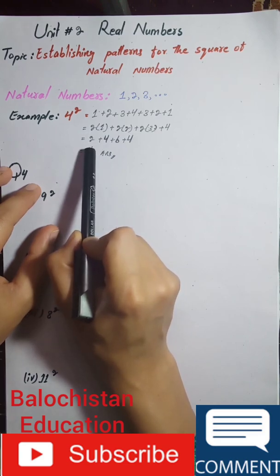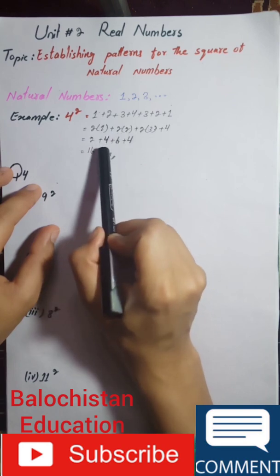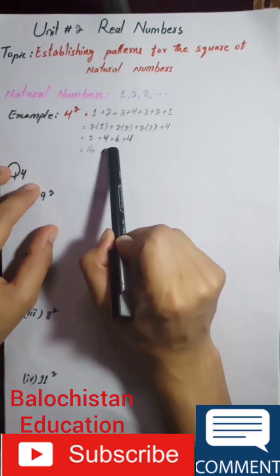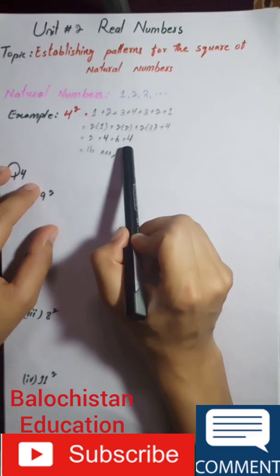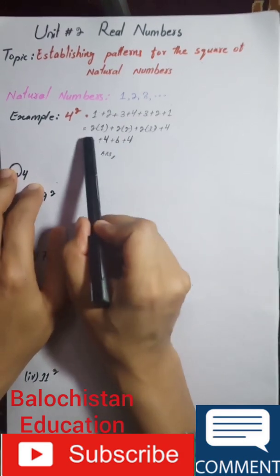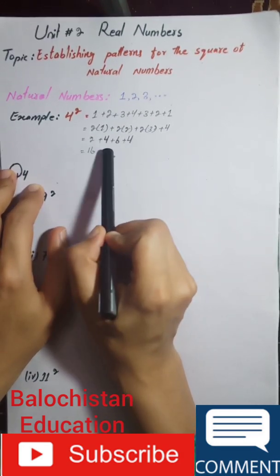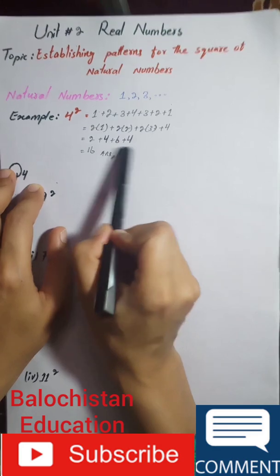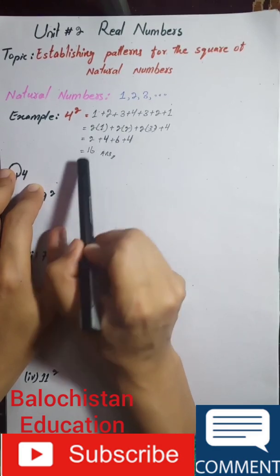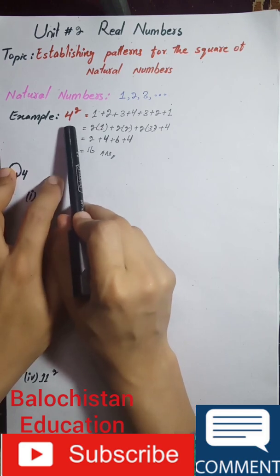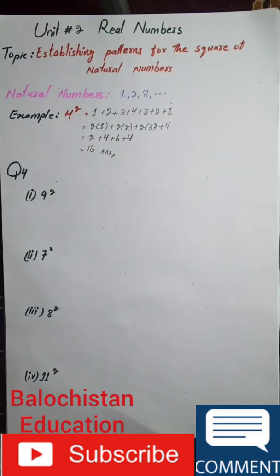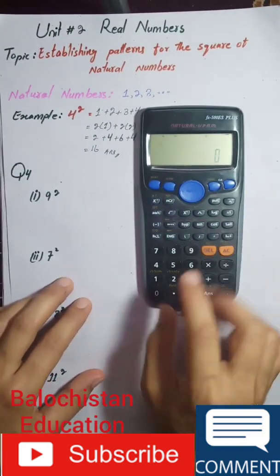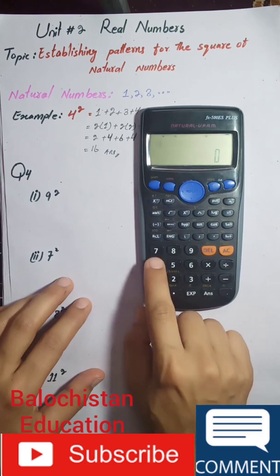At the end we have 4 only one time, so it will be written as it is. Now: 2 multiplied by 1 results in 2, 2 multiplied by 2 results in 4, 3 multiplied by 2 results in 6, and 4 is written as it is. By adding all of these we get: 4 plus 4 is 8, plus 2 is 10, and plus 6 is equal to 16. This proves that the square of 4 is equal to 16.